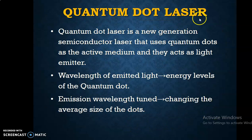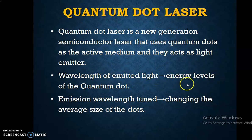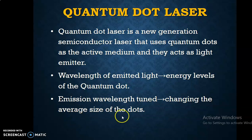In a quantum dot laser, we use quantum dots as the active medium, and light emission happens from them. The wavelength of the emitted light is determined by the energy levels of the quantum dot. The emission wavelength can be tuned — that means changed — by changing the average size of the dots. By changing the size of the dot, the wavelength is changed.